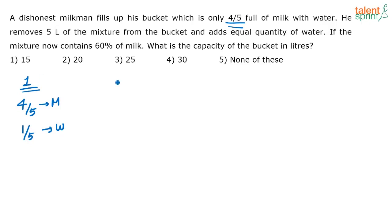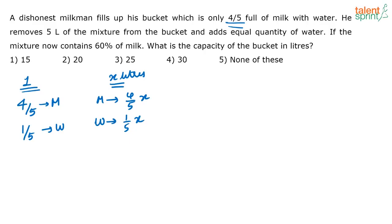If we say the total capacity of the bucket is x liters, then how much milk was there? Four-fifths x liters of milk. How much water was added? One-fifth x liters of water. Now from this mixture he is removing five liters. Since four-fifths of the bucket is milk and one-fifth is water, the ratio of milk to water in the bucket is four to one.